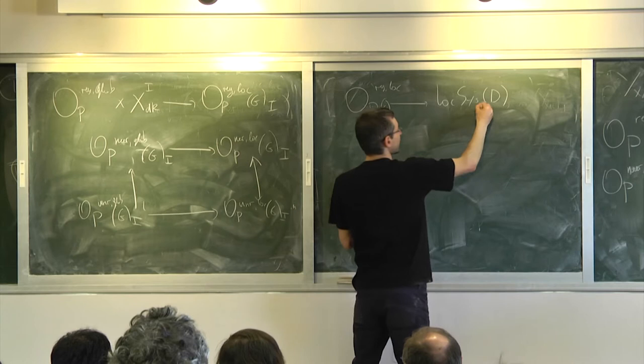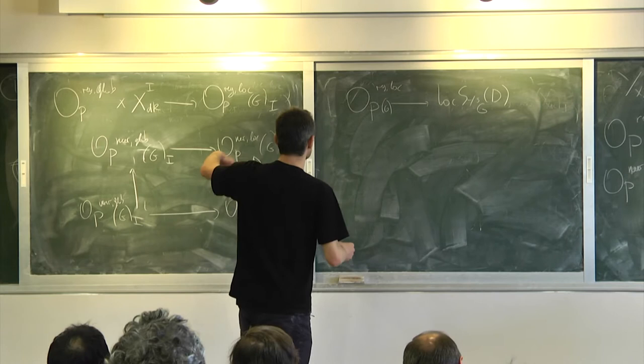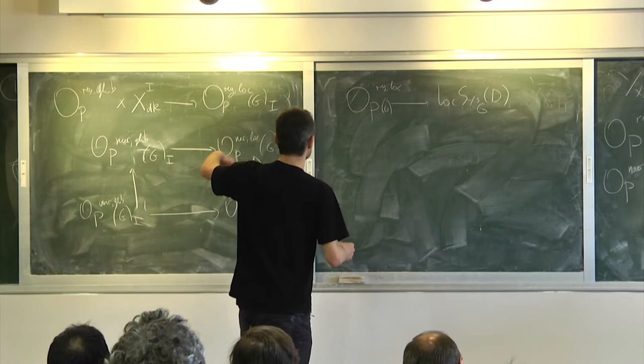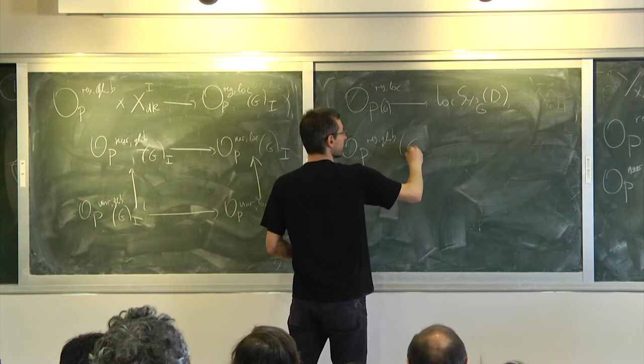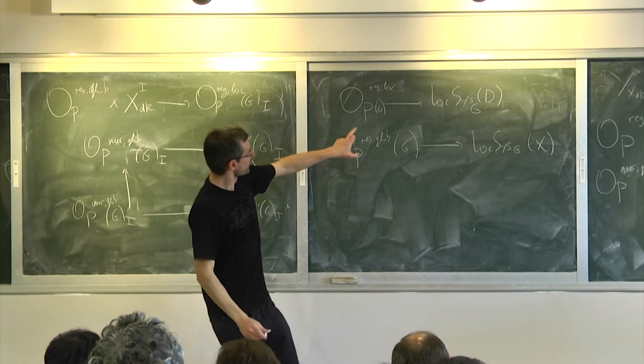That was defined as jets into something, and if you take horizontal sections of that something you'll get LocSys. So therefore, if you take regular global guys, at the level of global sections you'll map to the global LocSys on your curve.